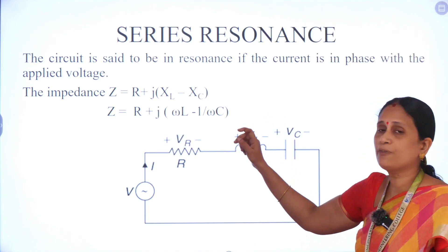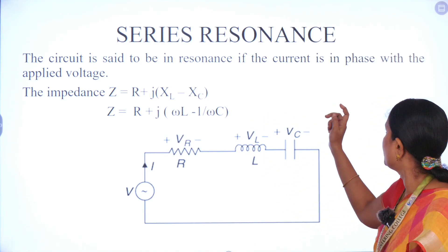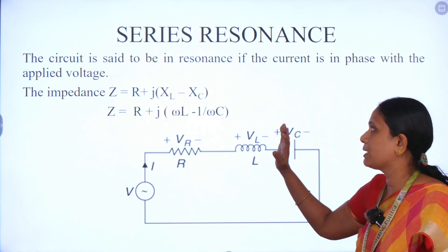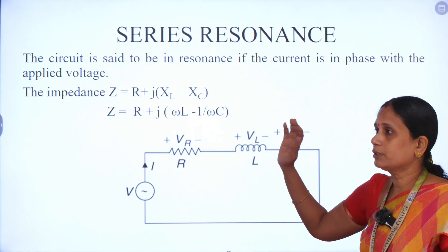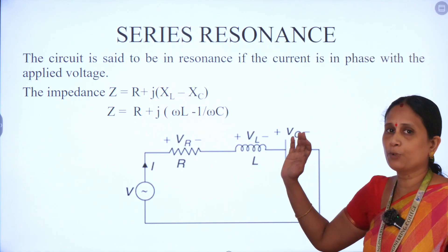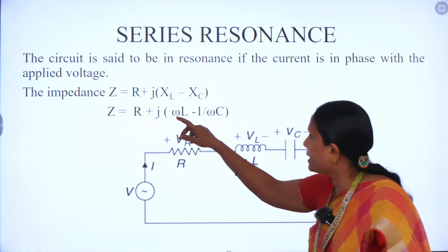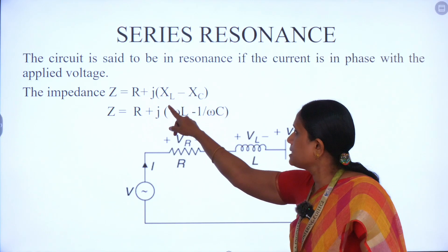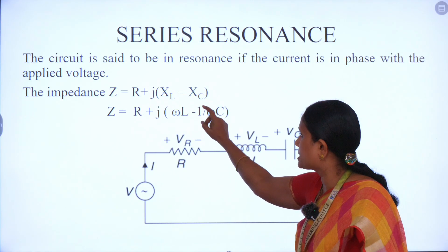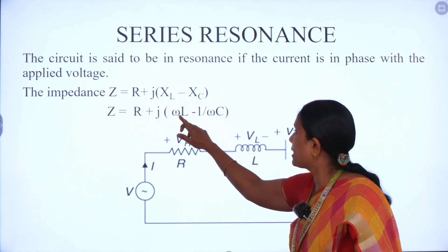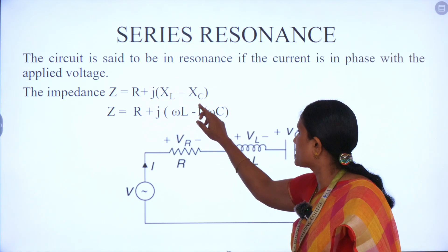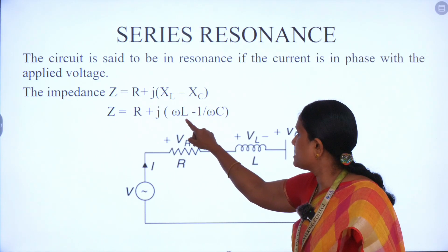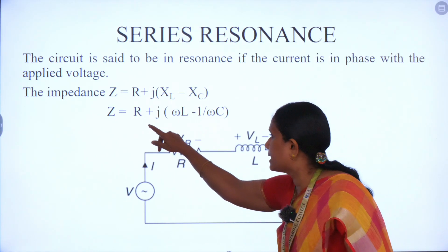What is series resonance? The circuit will be in series resonance if the current is in phase with the applied voltage — that means the voltage and current will be in the same direction, angle will be 0, so the power factor is unity. Then impedance Z will be equal to R + j(XL − XC), where XL is inductive reactance and XC is capacitive reactance. The formula for XL is ωL and for XC is 1/(ωC). Omega is the angular frequency, L is inductance, C is capacitance, and R is resistance.